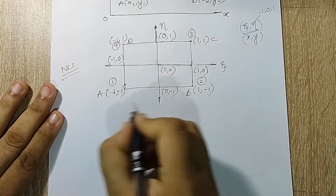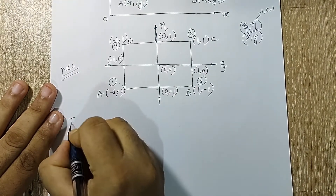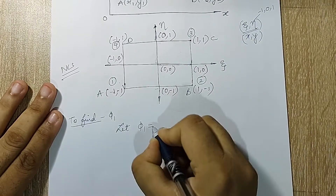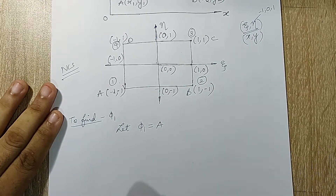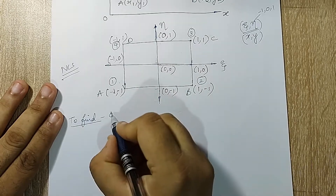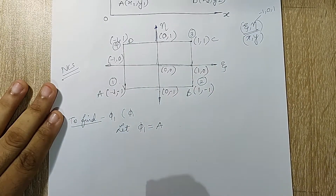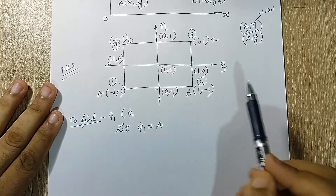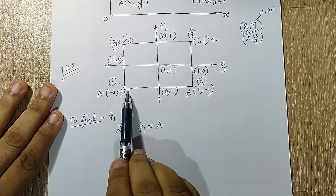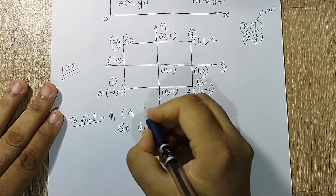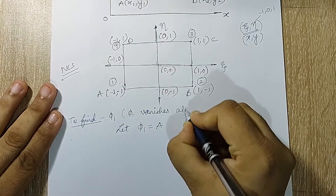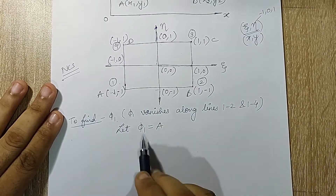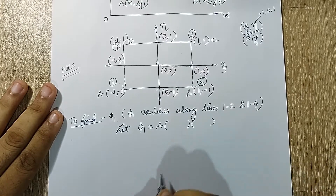Now we have converted into the natural coordinate system, so I will start with the calculation of the shape function for each node, beginning with phi_1. To find phi_1, note that this term will vanish along certain lines. Observing the element, there are four lines: 1-2, 2-3, 3-4, and 4-1. Phi_1, which corresponds to node 1, will vanish along lines 1-2 and 1-4. So phi_1 vanishes along lines 1-2 and 1-4.